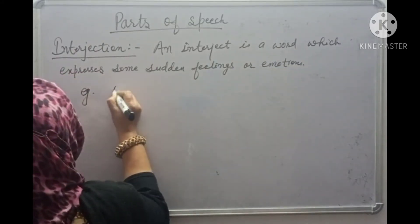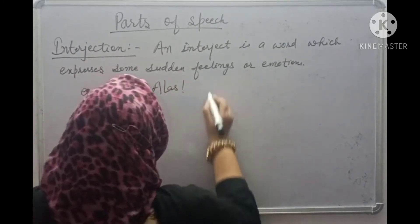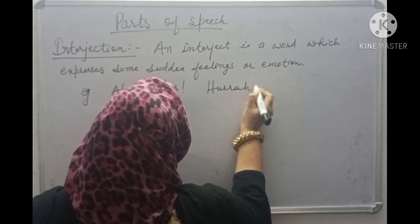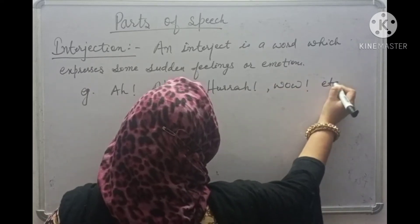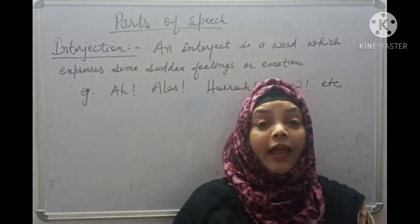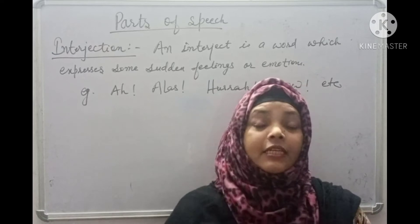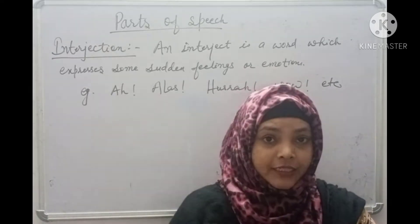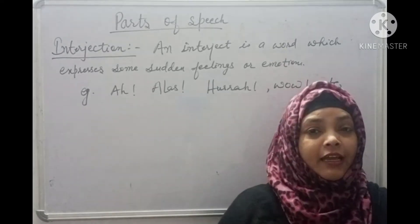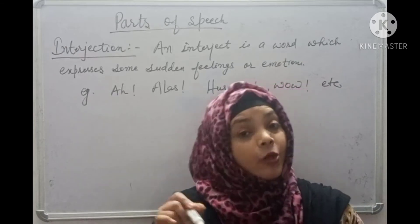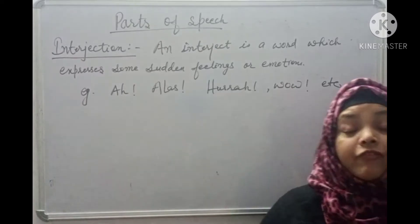Examples of interjections are: ah, alas, hurray, wow, etc. Just like an exclamatory sentence, let's recall — an exclamatory sentence is a sentence which expresses some sudden feelings like happy, sorrow, hatred, surprise, etc. Similarly, an interjection is also that kind of word which we use to talk about feelings and emotions.